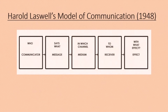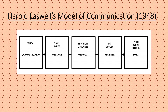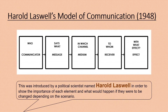Number 1: Harold Lasswell's model of communication, 1948. In this figure, we can see five elements: the communicator, the message, the medium, the receiver, and effect — who says what in which channel to whom with what effect. This was introduced by a political scientist named Harold Lasswell in order to show the importance of each element and what would happen if they were to be changed depending on the scenario.